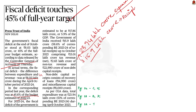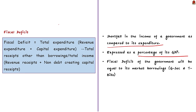Just as we borrow money from friends and relatives when we spend more than we earn, when a fiscal deficit occurs, the government borrows money from the market — that is, from people — by issuing G-secs and treasury bills. So in any given year, the fiscal deficit of the government will be equal to its market borrowing. Let us now see the steps that can be taken to reduce the fiscal deficit.